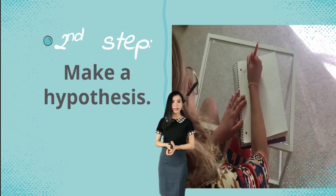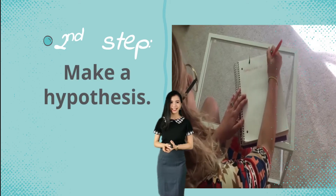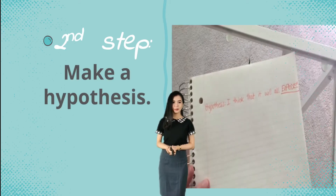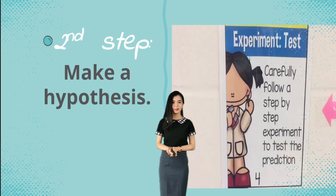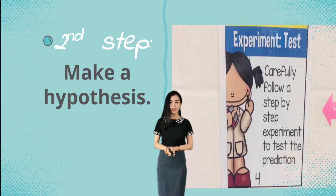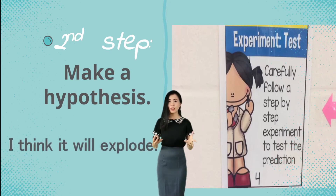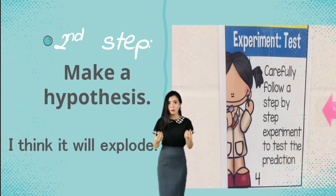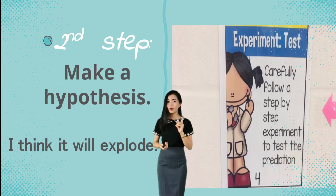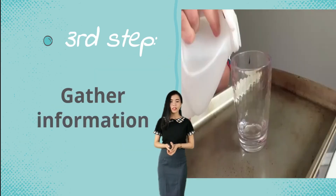The second step is make a hypothesis. Her hypothesis: I think it will explode. So she thought that if you add those materials together, it will explode. We're going to find out if that's correct. The third step is gather information.